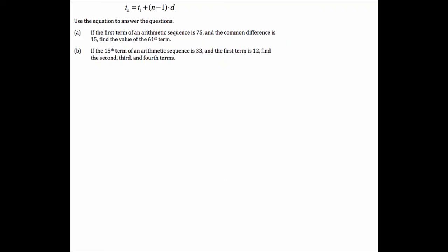Here's part B, also focusing on the same formula. The 15th term, that means n is 15, with value 33, first term 12, and what we're looking for is the second, third, and fourth terms.